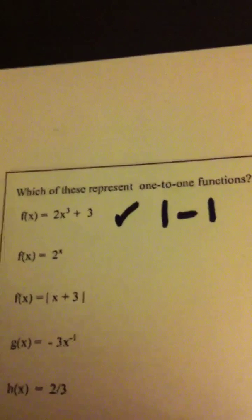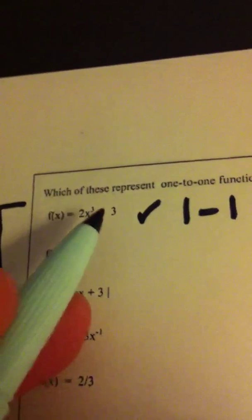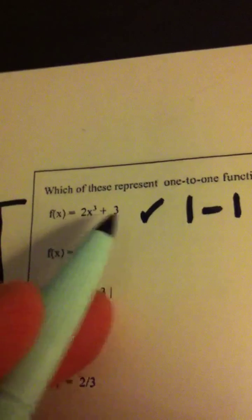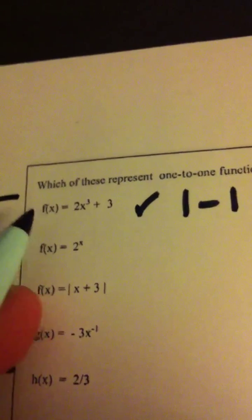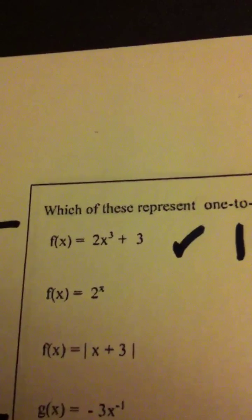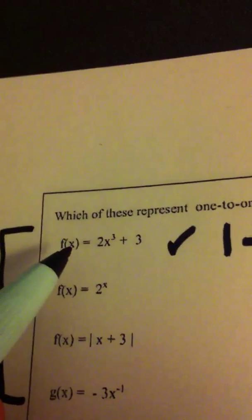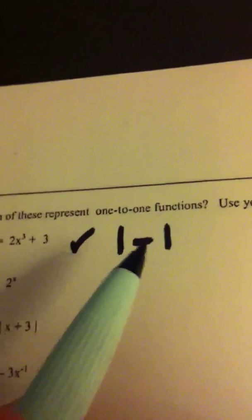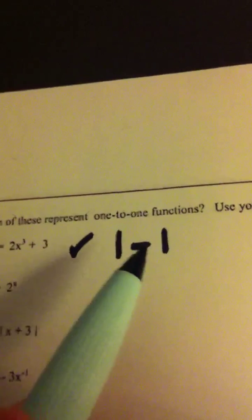Now, what that means in the future is that if I tried to find a formula for its inverse, I could find a formula for its inverse function. It is a function whose inverse is also a function, because it is one-to-one. That's what one-to-one means.